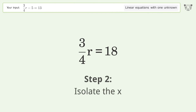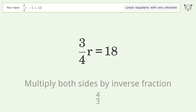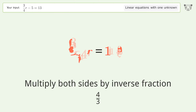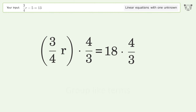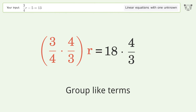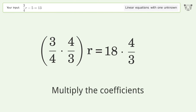Isolate the variable by multiplying both sides by the inverse fraction 4 over 3. Group like terms, then multiply the coefficients.